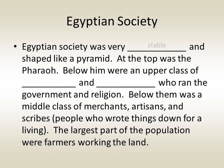Egyptian society was very stable and shaped like a pyramid. At the top was the pharaoh. Below him were an upper class of nobles and priests involved in government and religion. Below them was a middle class of merchants, artisans, and scribes. The largest part of the population at the bottom were farmers who worked the land.